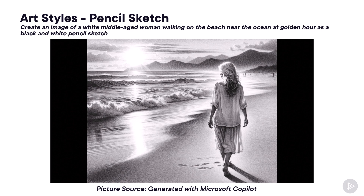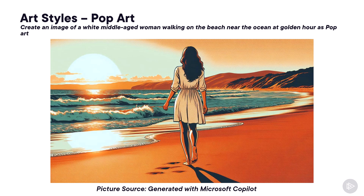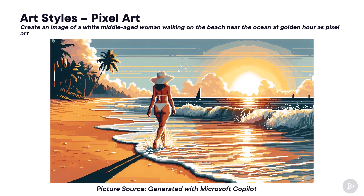I can also ask Copilot for a pencil sketch of my image. Again, we are using the same prompt — it's just the image style that is different. Here I was even more specific: I asked for a black and white pencil sketch. I could also ask for the same image in pop art style, and here is a last example of our same image but in pixel art style. As you can see, the past six slides have all been asking Copilot for the same exact image but in different styles, which creates completely different images.